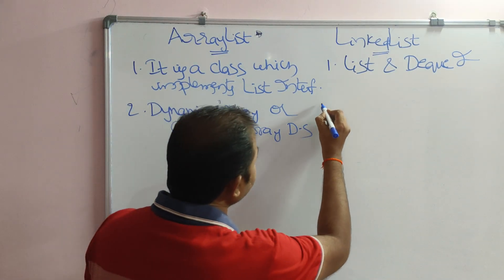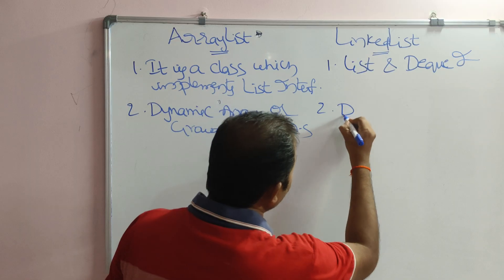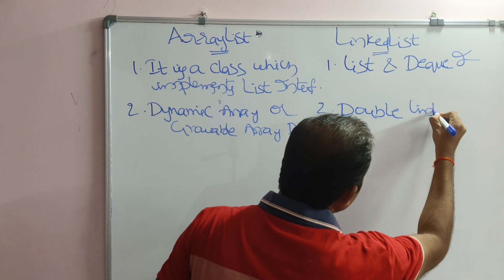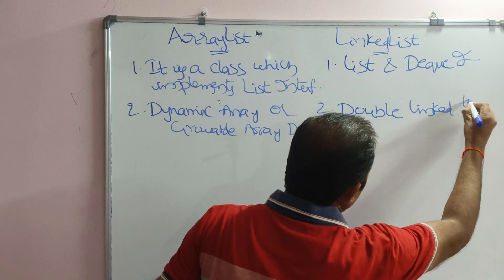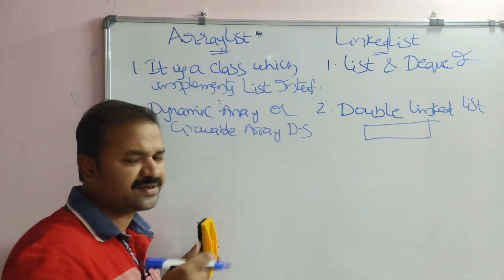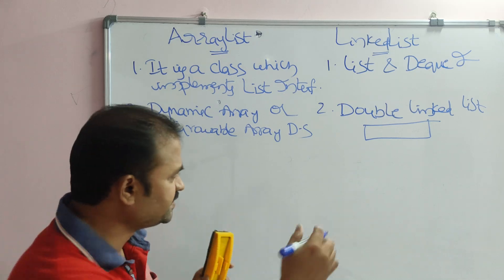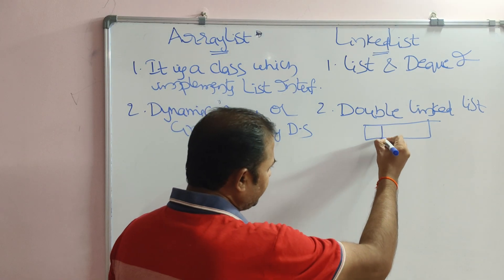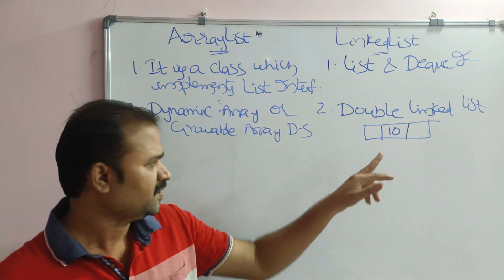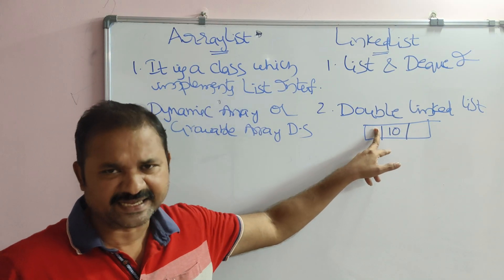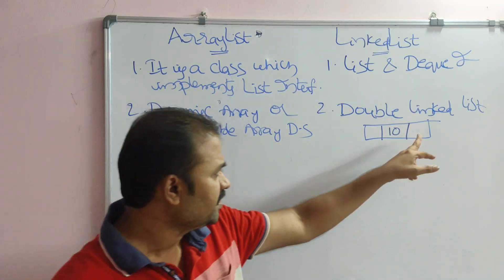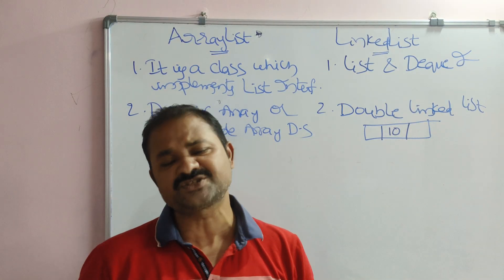LinkedList uses a doubly linked list as its data structure. In a doubly linked list, each node has two links: one link stores the address of the previous node, and the other link stores the address of the next node.